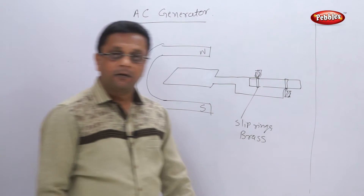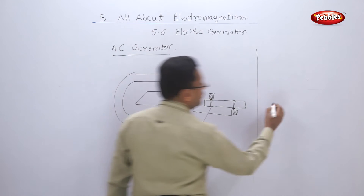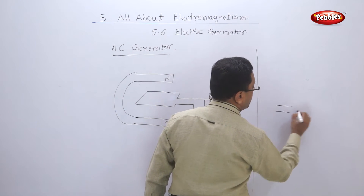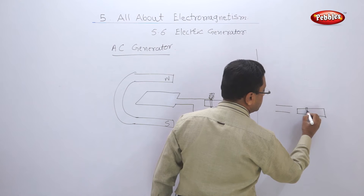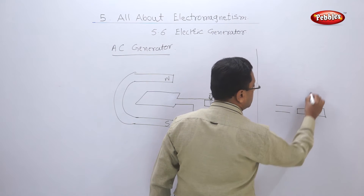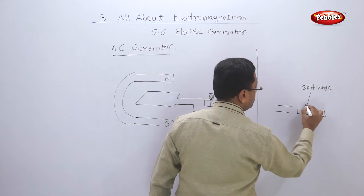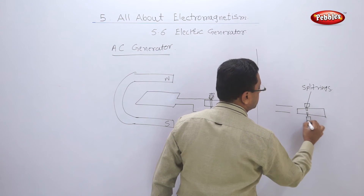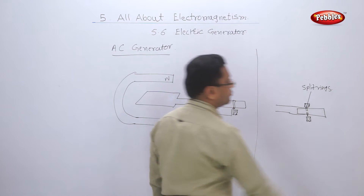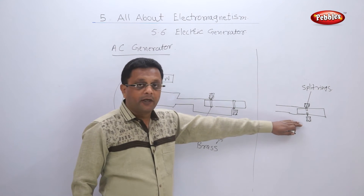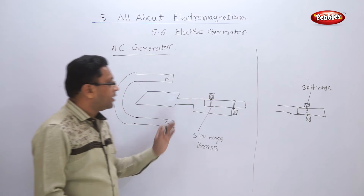In the DC generator, up to the armature and axle part, the figure is the same. But to this axle we use split rings instead of slip rings. All other parts — carbon brush and the rest — are the same. This construction is similar to your electric motor, while the AC generator is somewhat different.